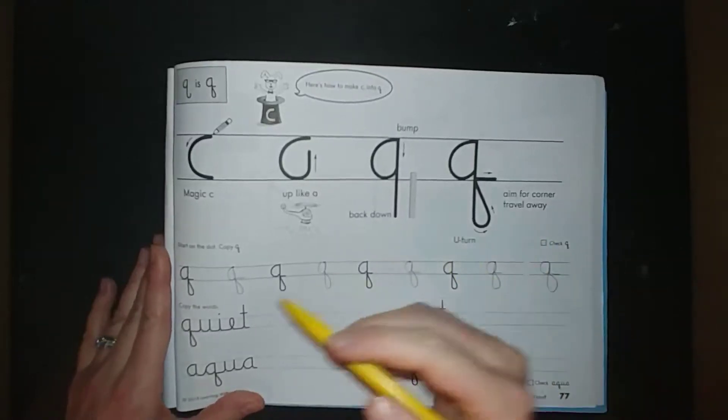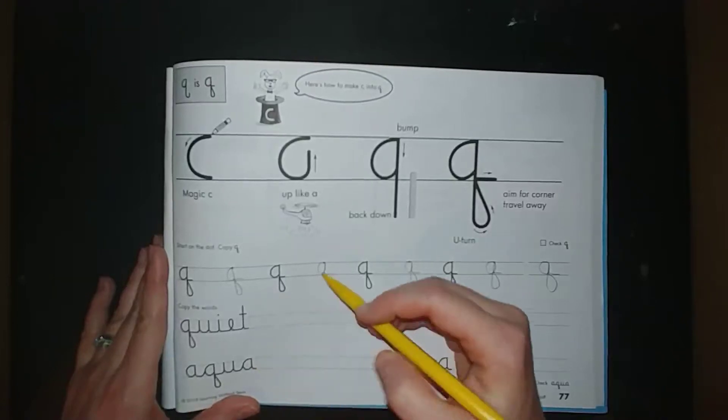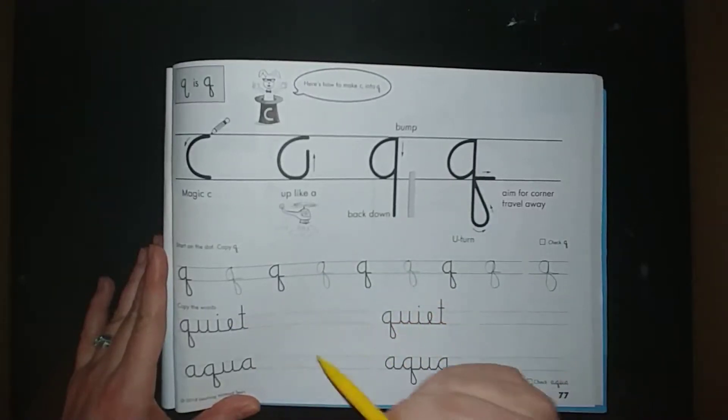The words down here are quiet and aqua. I want you to practice writing them two times each.